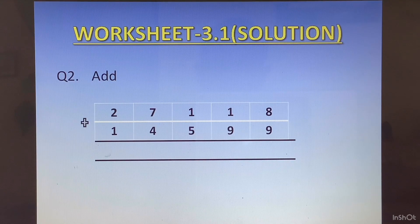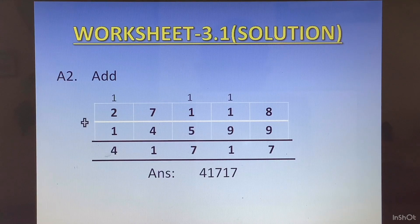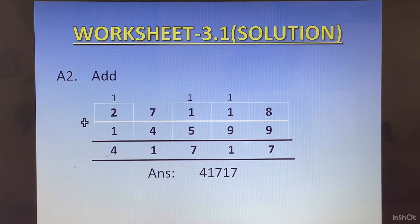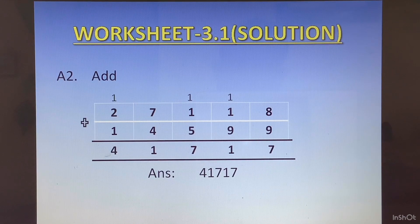I hope by now your concepts are absolutely clear. I have just shared the answer directly with you. In case you have made a mistake, I have also written the carry overs on top. This will help you rectify your mistake. Question 2 was 27118 plus 14599 and the answer is 41717.